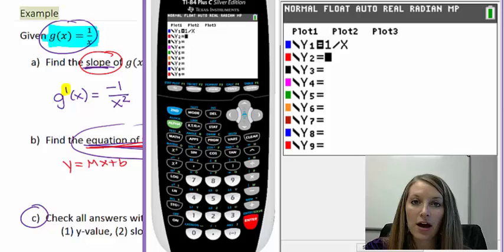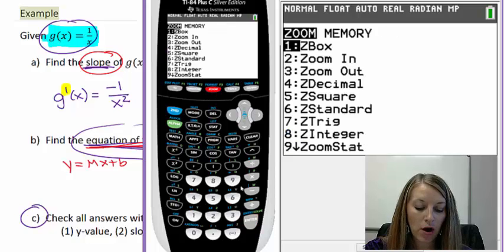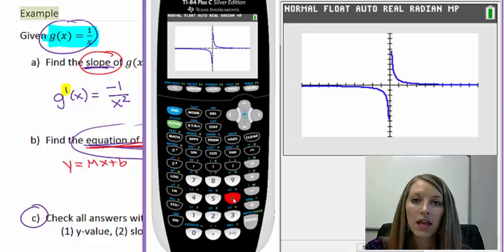I have my graphing calculator here, and in my y function, I have substituted in my equation, 1 over x. Let's go ahead and graph this on the standard window. We can see the graph that looks like this here, and then we're going to check all three of those things that I mentioned earlier. The very first thing that we want to double check is do we have the correct y value?